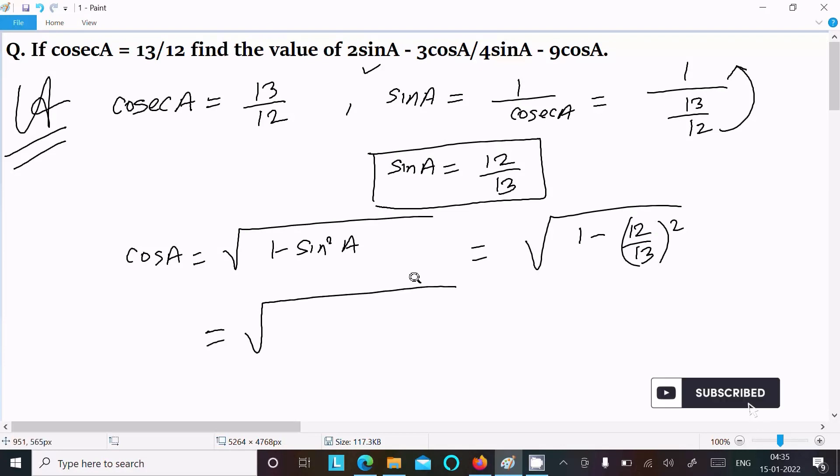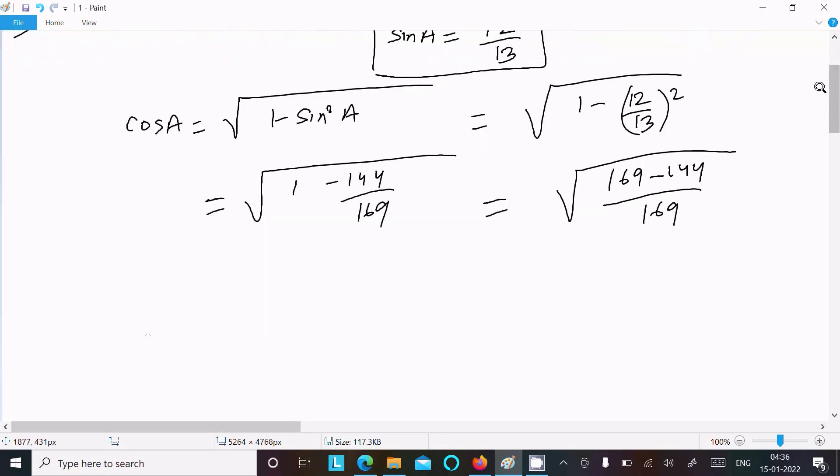This becomes √(1 - 144/169), which equals √((169 - 144)/169) = √(25/169).